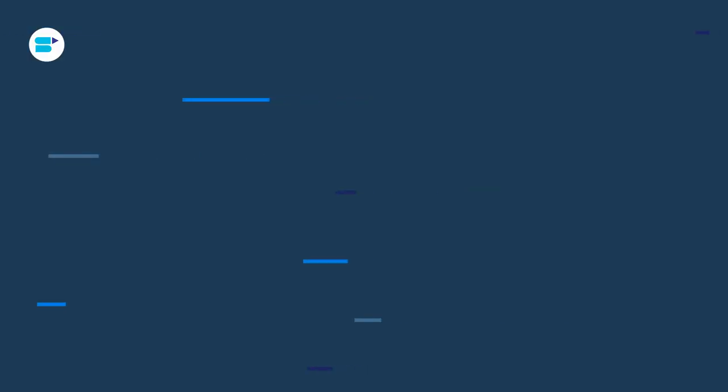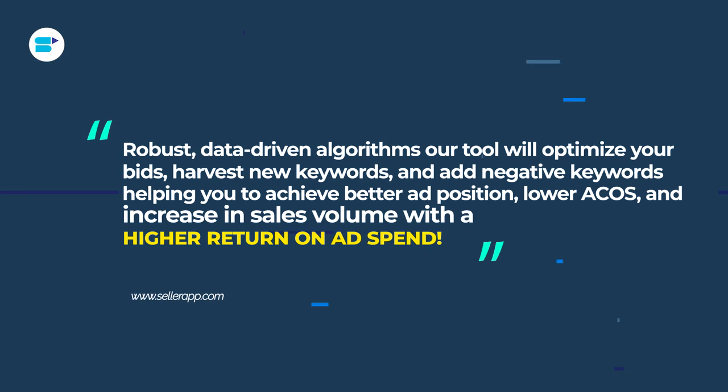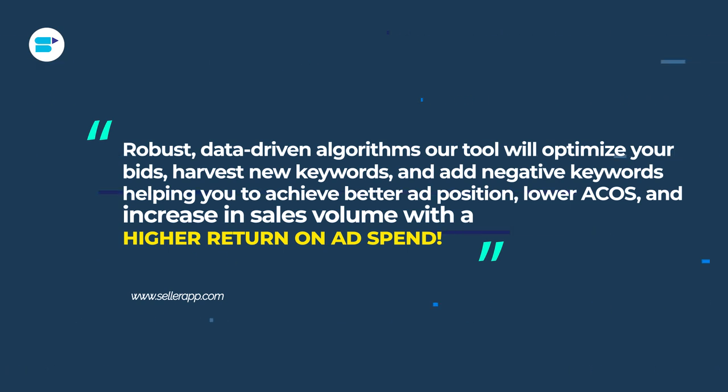Advertising automation is one of the most sought-after features in SellerApp's dashboard. Thanks to our machine learning algorithms and data-driven insights, we can now help you automate your PPC campaigns for better ROI. R2 will optimize your bids, harvest new keywords, and add negative keywords, helping you to achieve better ad position, lower ACoS, and increase in sales volume with a high return on ad spend.